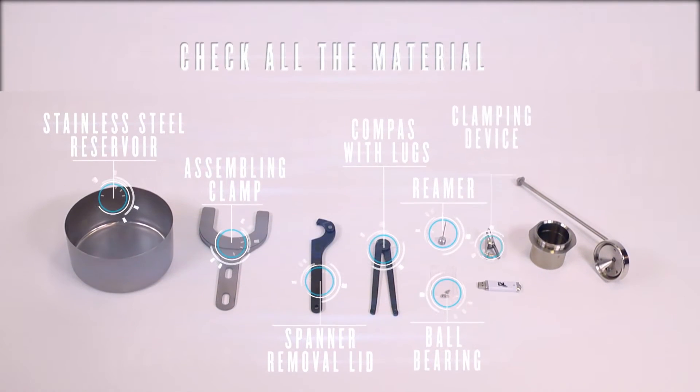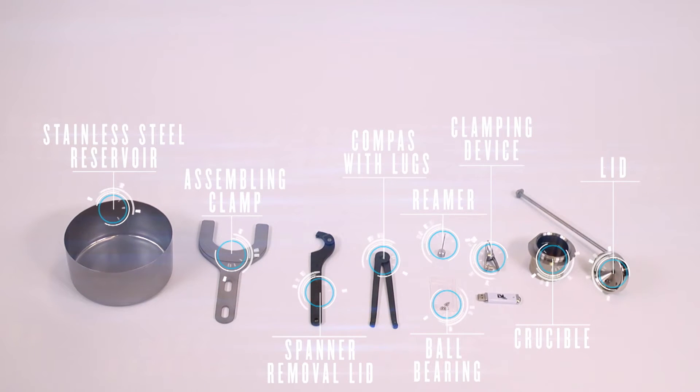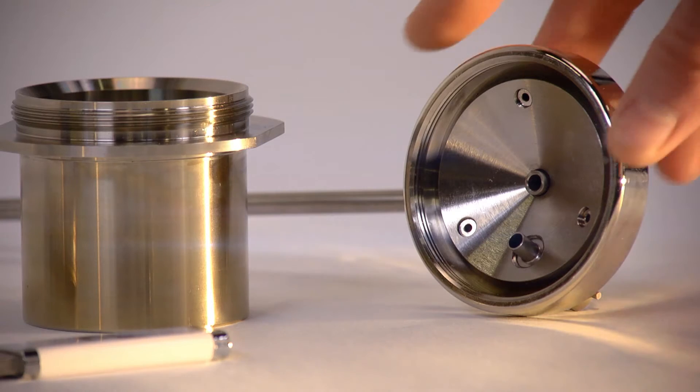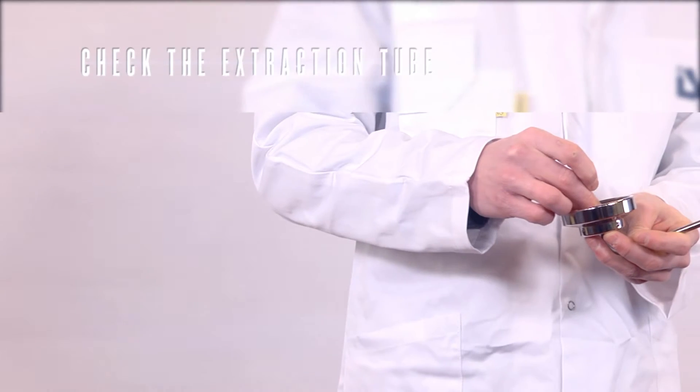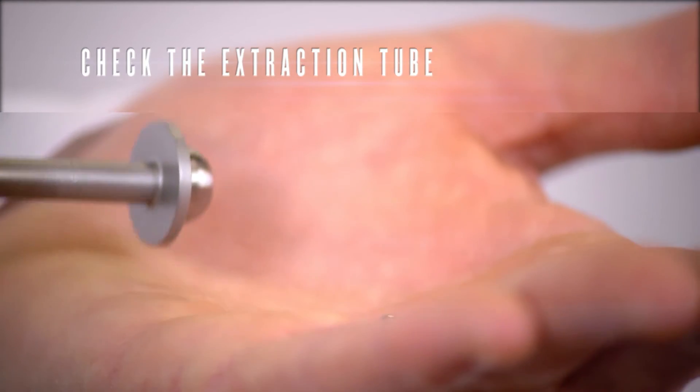Before starting the test, check all the parts of the test cup and its accessories. If needed, use the appropriate solvents to thoroughly clean and dry them. Pay particular attention when checking both the crucible and cover. These parts must be free from clogged lacquer or residual material.